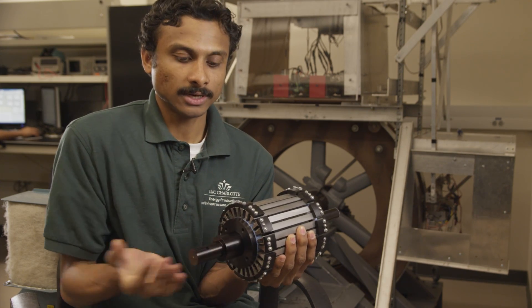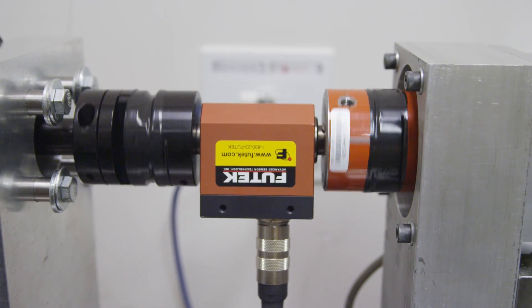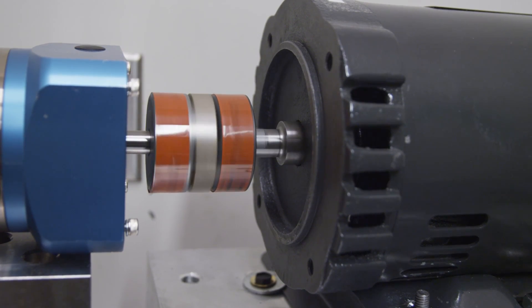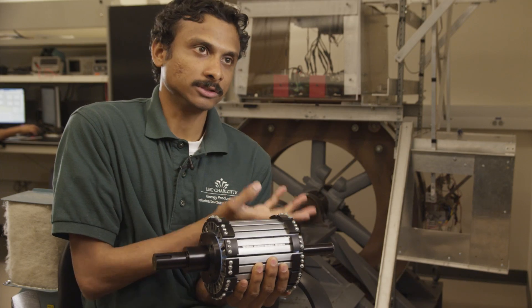So when we rotate this at say 20 rpm, this outer rotor, this shaft will rotate at 4.25 times 20 rpm, which is around 85 rpm.